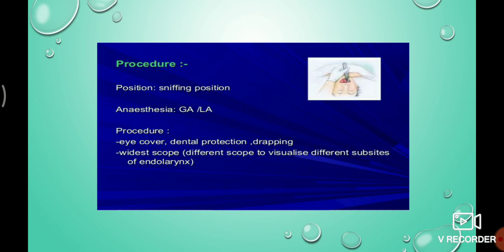Regarding the procedure: the patient is placed in the sniffing position, which means the patient lies in the supine position. The head is elevated by 10 to 15 cm by placing a pillow under the occiput or by raising the head flap of the operation table. The neck is flexed and the head is extended. Anesthesia used is local anesthesia.